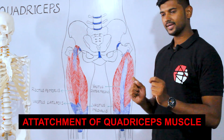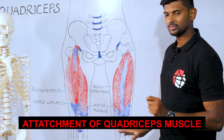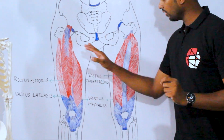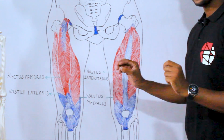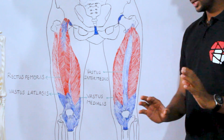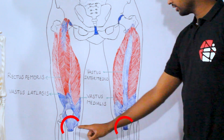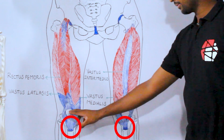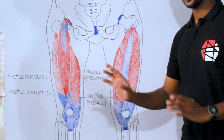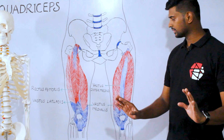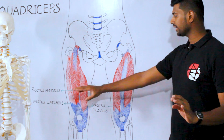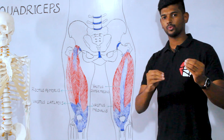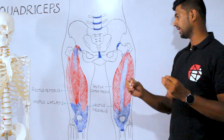Now we'll understand the attachment of the quadriceps muscle. All four muscles distally attach over the tibial tuberosity via the patella and patellar tendon. The proximal attachment varies between each muscle.